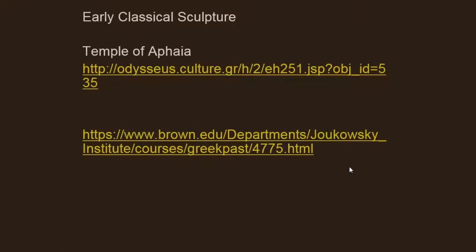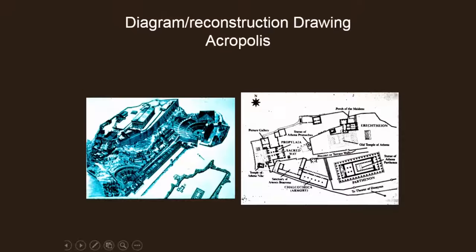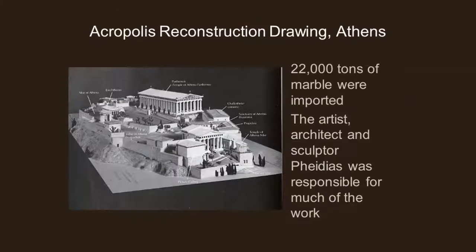I've got some links here about the Temple of Aphaia, and here's a diagram and a reconstruction drawing of the Acropolis. You can see that the Temple of Aphaia is on the island of Aegina, so from the Acropolis the Athenians could look across and see the Temple of Aphaia from the top of the hill. To build this Acropolis they used 22,000 tons of marble, and a sculptor named Phidias was responsible for most of the work. The Parthenon is at the top.